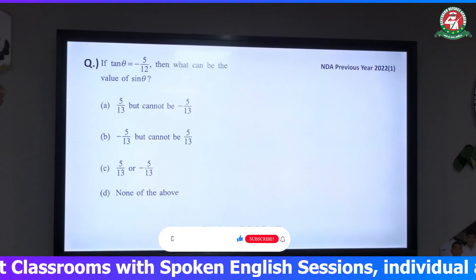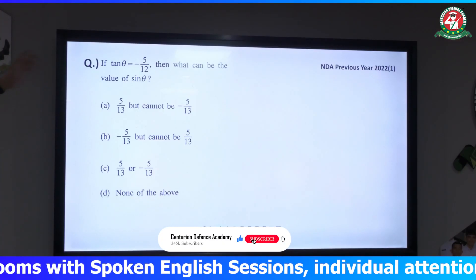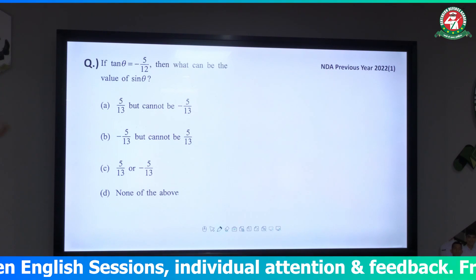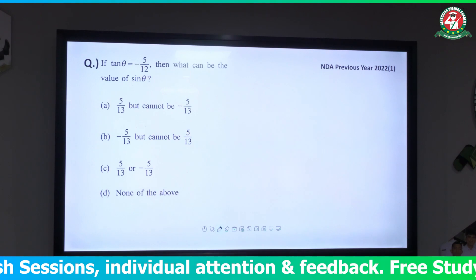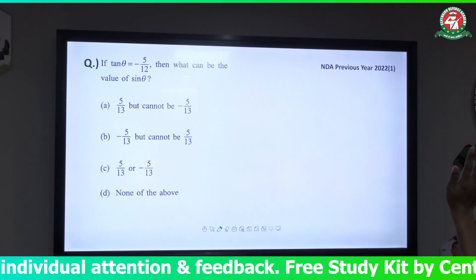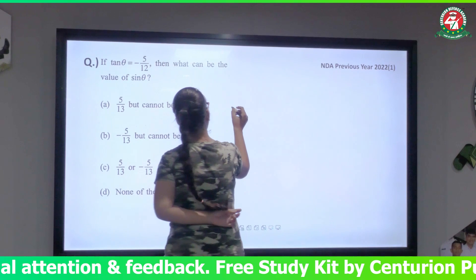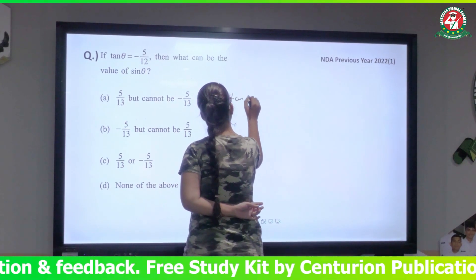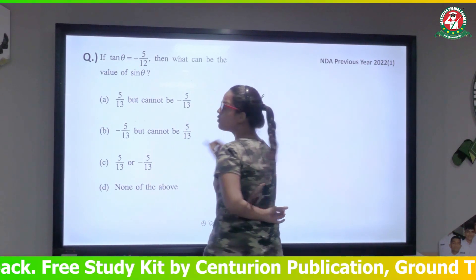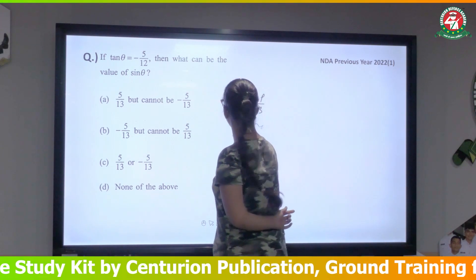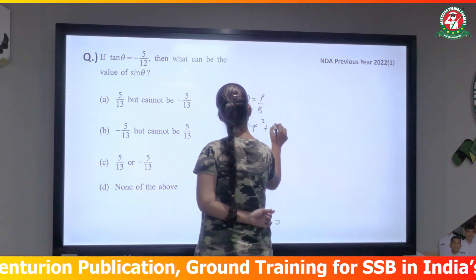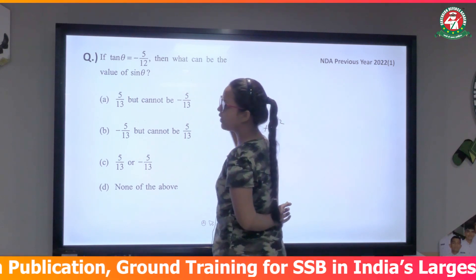If tan θ equals minus 5 by 12, then what can be the value of sin θ? This is a 2022 exam question. We know that tan θ equals perpendicular upon base. Using Pythagoras: H² = P² + B², so the hypotenuse value is 13.